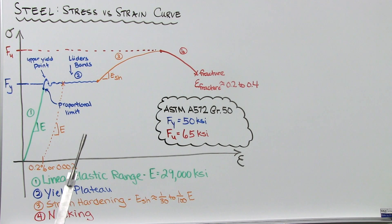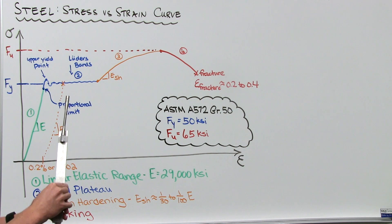In steel design, we will take my modulus of elasticity to be 29,000 KSI. And that slope works up to my yield stress FY.